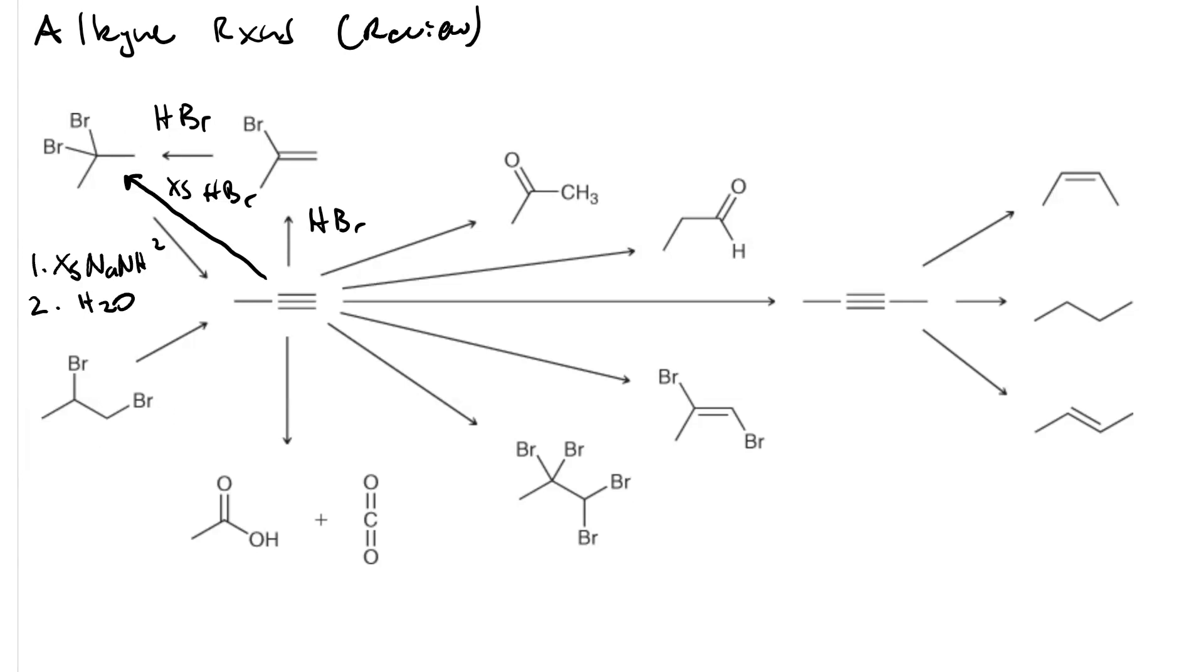To go from the alkyne to a carboxylic acid and carbon dioxide, that's ozonolysis. So that'll be first ozone, followed by water.